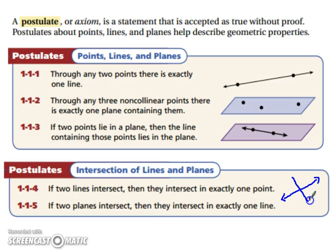If two planes intersect, then they intersect in exactly one line. I'm not going to draw the diagram here because our next piece actually shows us this.